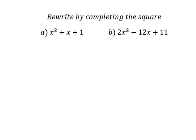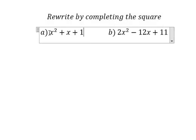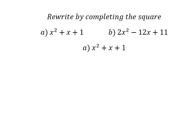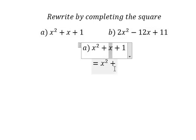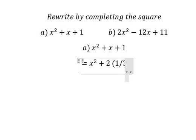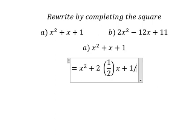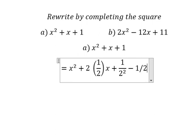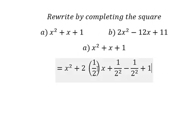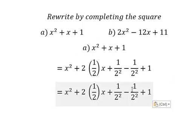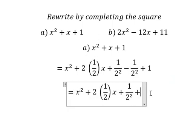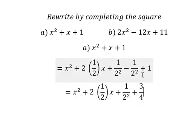Hello everybody, today I want to show you how to complete the square. I will show you the step by step. For x, we take the coefficient and multiply by 1/2, then we need to add (1/2)² and later subtract (1/2)² as well. From this we get 3/4, and we have the formula here.